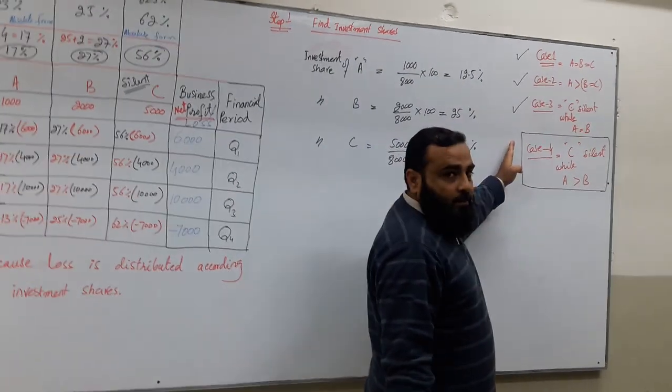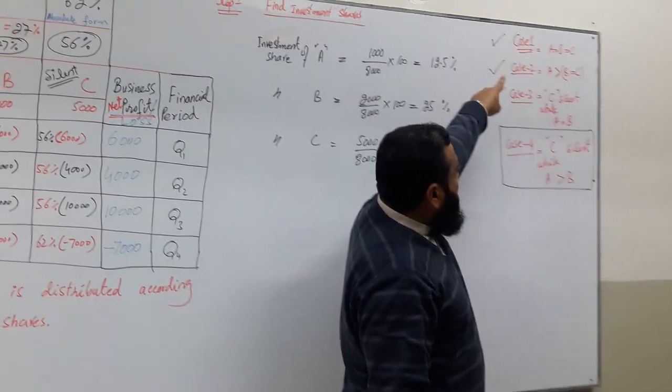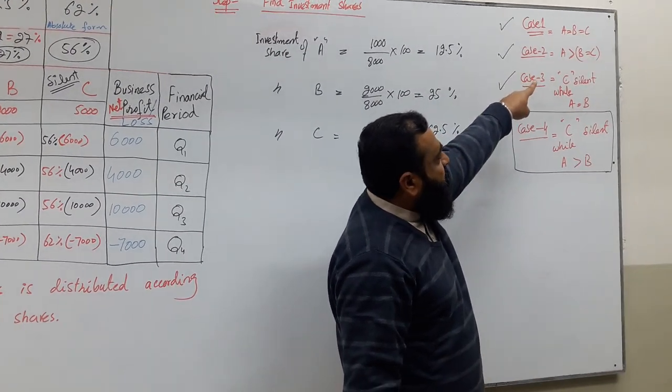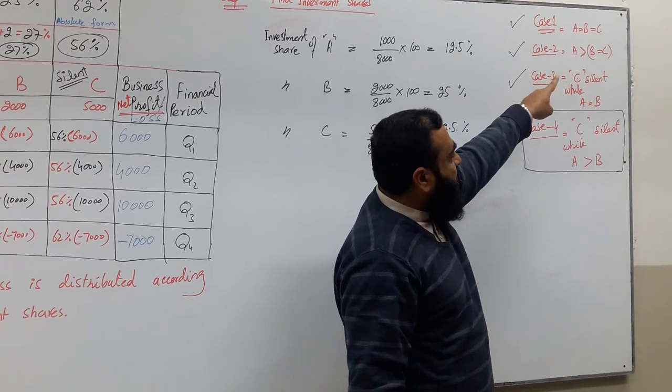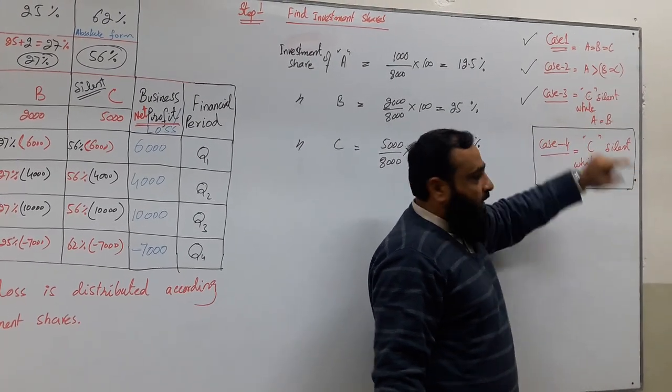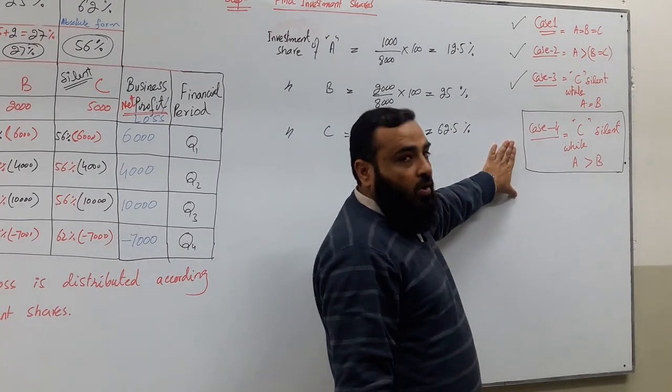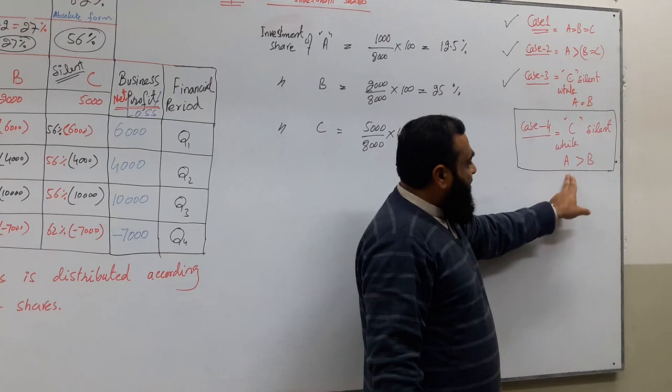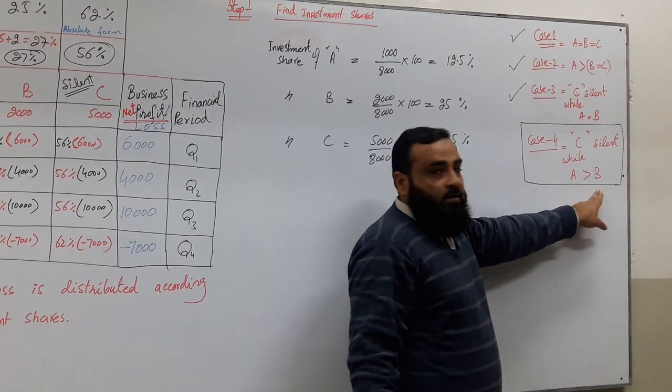Let's see here. These are the four cases. In Case 1, all were equal to each other. In Case 2, one partner was more experienced than the other, but others were equal. In Case 3, C was silent but A was equal to B. But this is Case 4 now - C is silent while Mr. A is more experienced than Mr. B.